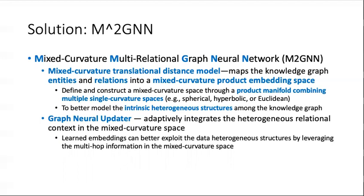The graph neural updater model adaptively integrates the heterogeneous relational context in the mixed-curvature space. And then the embedding can better exploit the data heterogeneous structures by leveraging the multi-hop information in the mixed-curvature space.